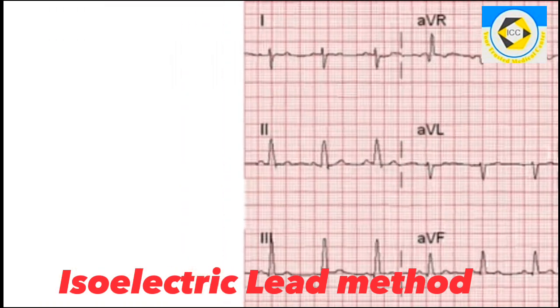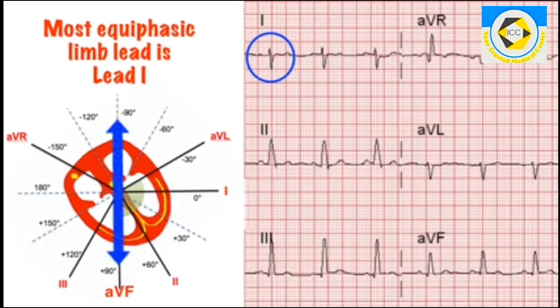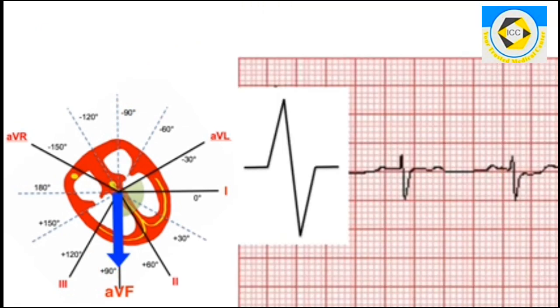Second method is isoelectric lead method. It consists of finding an isoelectric or equiphasic lead, one with equal or nearly equal negative and positive deflections. Axis line is perpendicular to the direction of isoelectric lead.